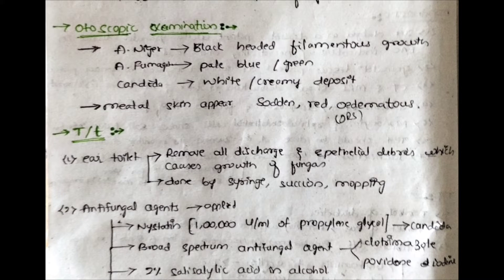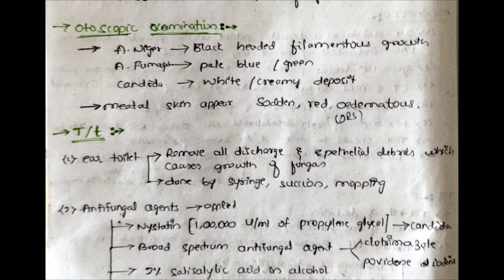On otoscopic examination: Aspergillus niger produces black-headed filamentous growth — black colonies. Aspergillus fumigatus produces pale blue or green color colonies. Candida albicans produces white or creamy deposits. The meatal skin appears sodden, red, and edematous.